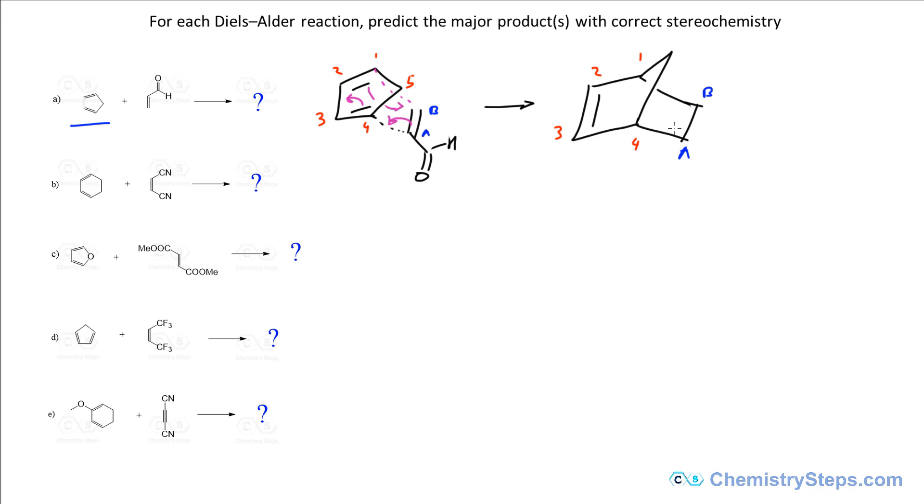Now the most important question here is whether we're going to point this group of the dienophile, the aldehyde, to this side or point it down as such. The answer is that they're both formed but there's a preference depending on the conditions that we're running the reaction.